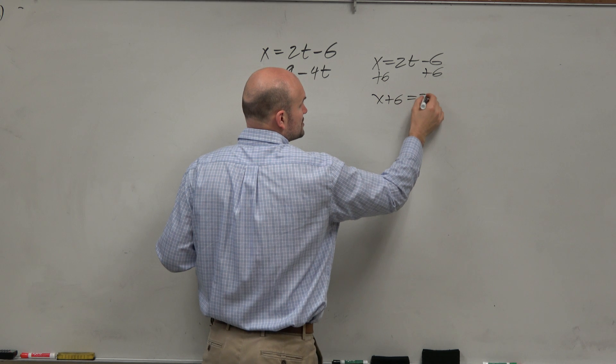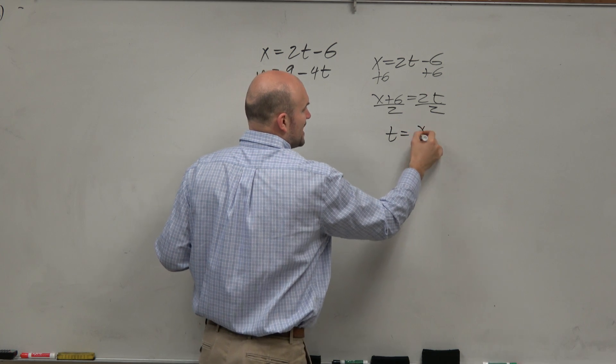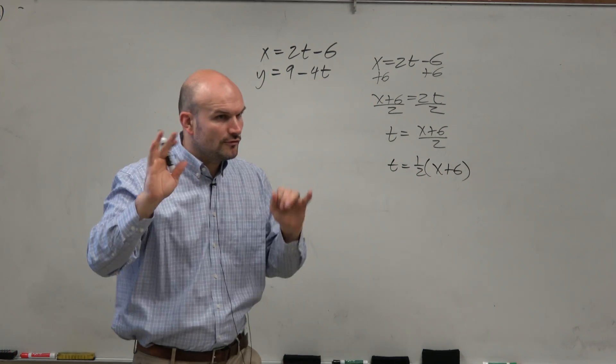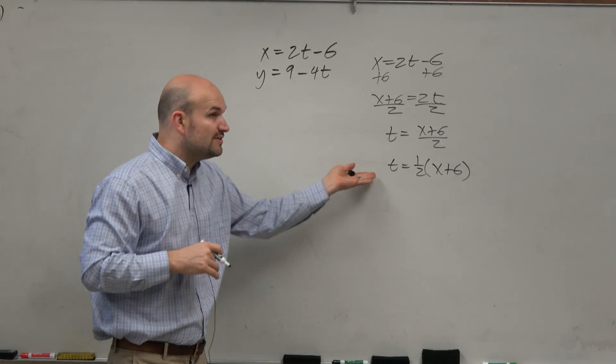So what I'm going to do is I'm going to add a 6. I'm going to have x plus 6 equals 2t divided by 2. So therefore, I could say t is equal to x plus 6 divided by 2. Or you could also write it like this. It doesn't really matter, however you want to think about it or whatever makes more sense to you.